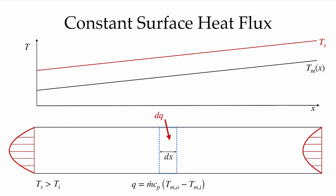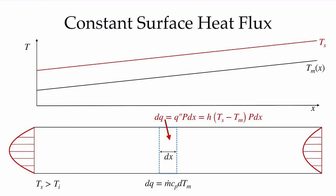Considering a small differential control volume of length dx, the differential heat transfer dq equals the constant heat flux Q'' times the perimeter p times dx. By Newton's law of cooling this equals h times (T_surface − T_mixed mean) times the area. We can also relate dq to the mass flow rate times specific heat times the temperature difference in and out. Combining and integrating gives dT_m/dx = q''p / (m-dot c_p), which we integrate directly.